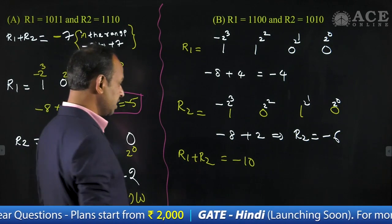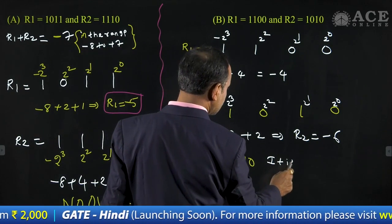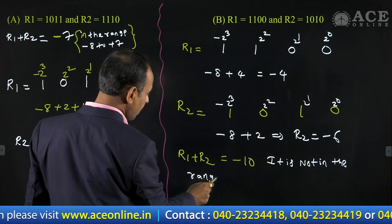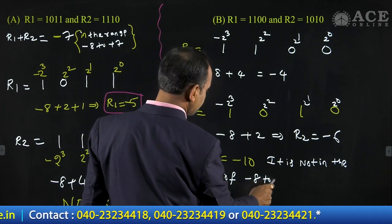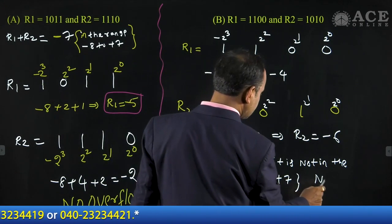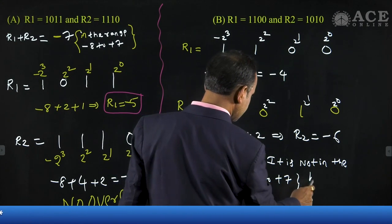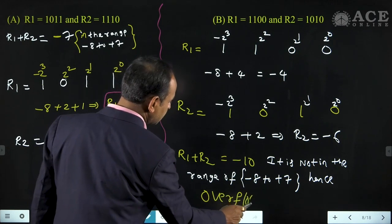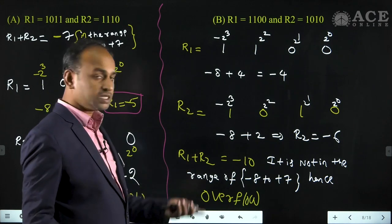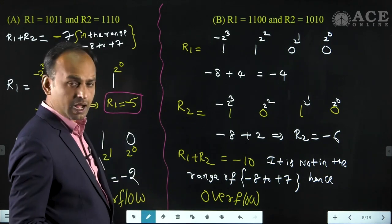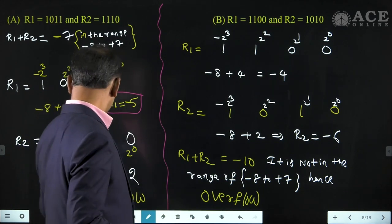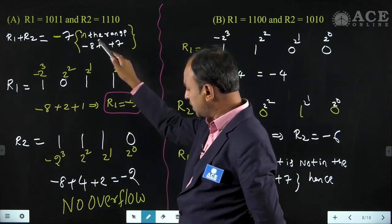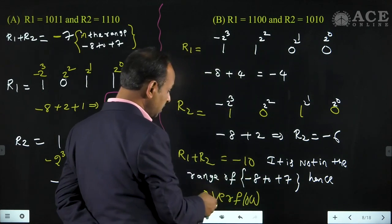Minus 10 is not in the range of minus 8 to plus 7. Since it is not within the range, overflow occurred. By verification, we confirm option B gives overflow. For option A, minus 5 plus minus 2 equals minus 7, which is within the range — no overflow. Minus 10 is not within the range — hence overflow occurred. Option B is the correct answer.